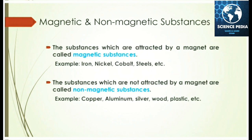Today's last lesson: magnetic and non-magnetic substances. Substances which are attracted by a magnet are called magnetic substances — for example, iron, nickel, cobalt, and steel. Substances which are not attracted by a magnet are called non-magnetic substances — such as aluminium, silver, copper, wood, and plastic.